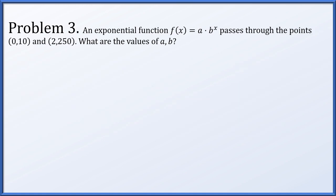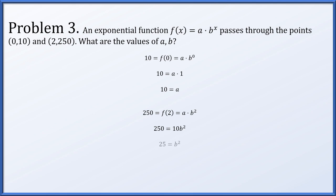Problem 3: an exponential function a·b^x passes through (0, 10) and (2, 250). What are a and b? Since f(0) = 10, we get a·b^0 = 10, and b^0 = 1, so a equals 10. Since f(2) = 250, we get 10·b^2 = 250, so b^2 = 25, and b is plus or minus 5. It's possible b is negative 5, but that would restrict the domain, so b is most likely positive 5.